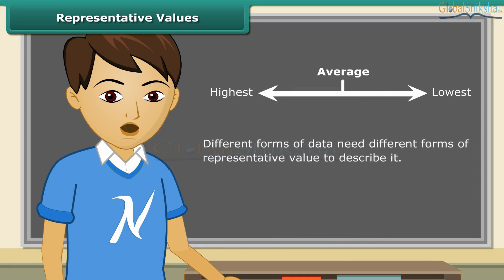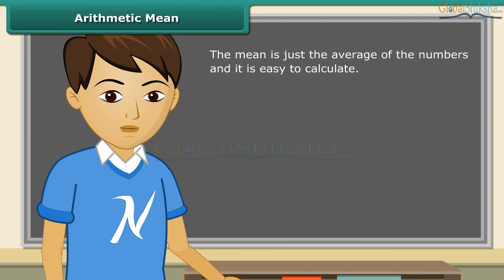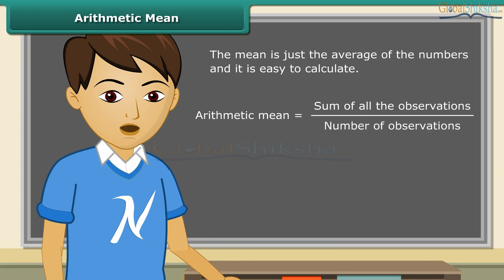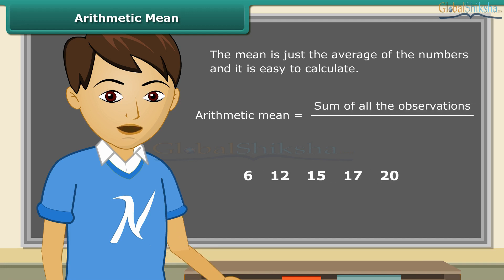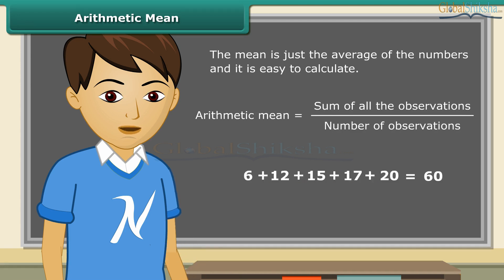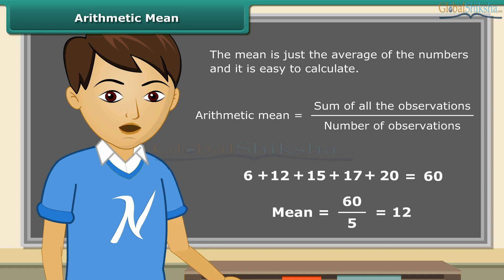Different forms of data need different forms of representative value to describe it. One of these representative values is the arithmetic mean. The mean is just the average of the numbers and it's easy to calculate. Mean is equal to the sum of all the observations divided by the number of observations. Let us calculate the mean of these numbers. Add up the numbers first — the sum is 60. There are 5 numbers total, so the mean is equal to 60 divided by 5, which equals 12. Therefore, the mean of the above numbers is 12.